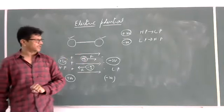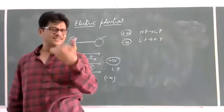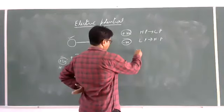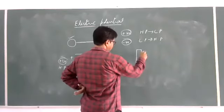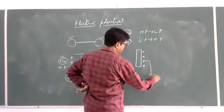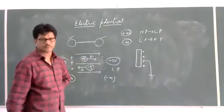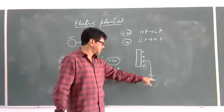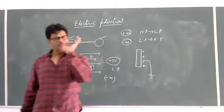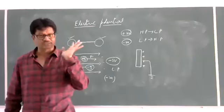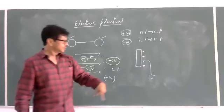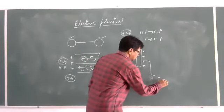Based on this concept, as I discussed in the previous chapter on electrification by induction: if the positive end is connected to the earth, the earth is a neutral body. Neutral body means the net charge is zero. So the net charge of the earth is zero. Because of a positive charge, there is a positive potential — suppose the potential is +4 volts.